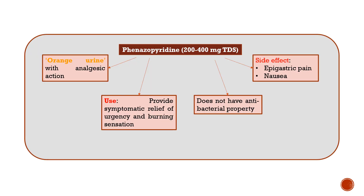Last but not least, talking about the urinary analgesic phenazopyridine: it is active at a dose of 200 to 400 mg three times daily. It can also be termed as a drug that causes orange urine, and it has analgesic action. Its use is to provide symptomatic relief of urgency and burning sensation. Side effects related to this drug are epigastric pain and nausea.